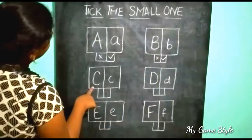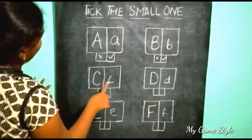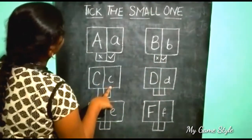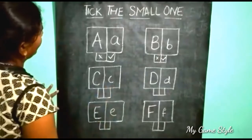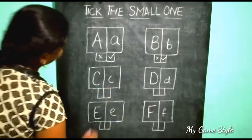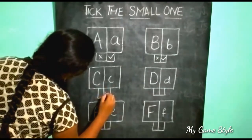Here, this is a big one and this is a small one. So we need to tick the small one.